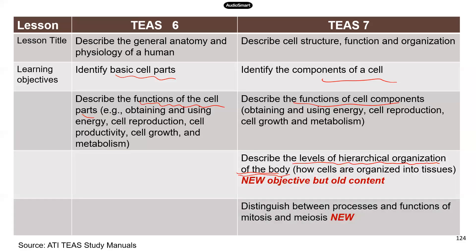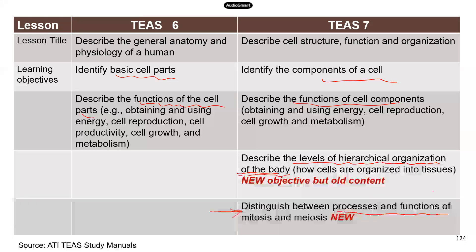We'll go over that on the next slide. There is a major new learning objective added to TEAS-7. There might have been a little of this topic in TEAS-6, but it was never very important. Now TEAS-7 has really identified this as a learning objective, so you really need to know it well. This is about the processes and functions of mitosis and meiosis.